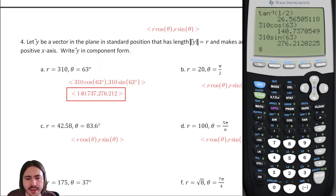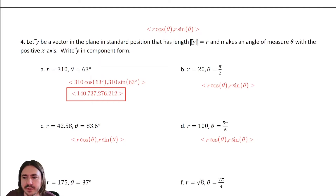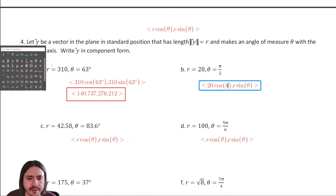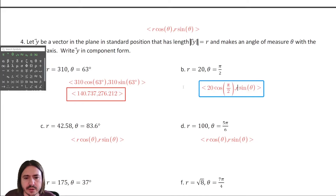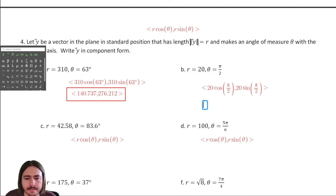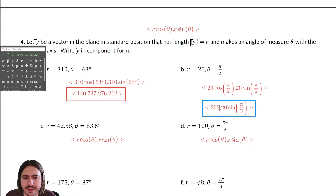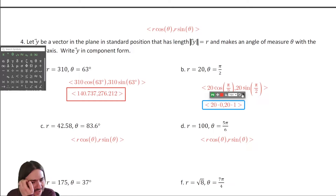Letter B: magnitude is twenty, direction angle is pi over two — that's on the unit circle, so no calculator needed. Twenty times cosine of pi over two: cosine of pi over two is zero. Twenty times sine of pi over two: sine of pi over two is one. So the vector is zero comma twenty. Much easier using the unit circle than switching to radians on the calculator.